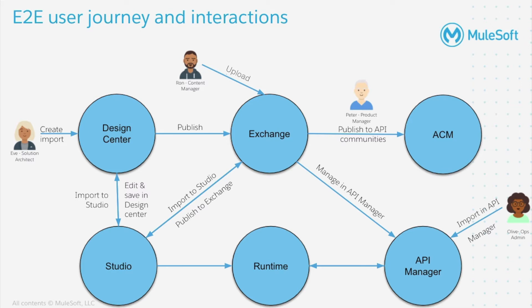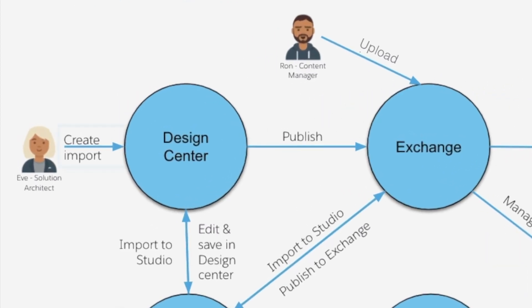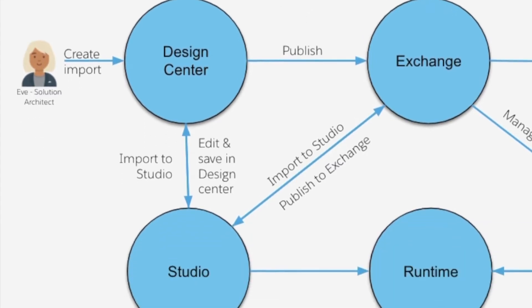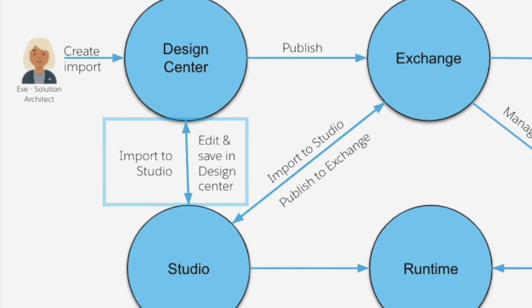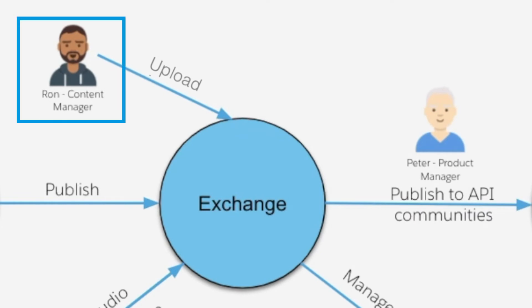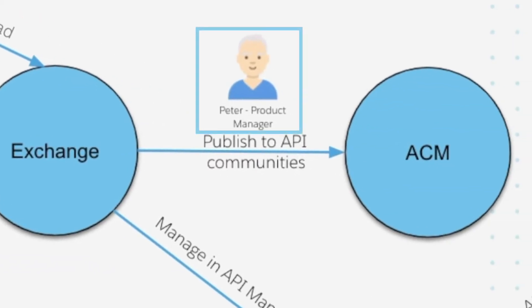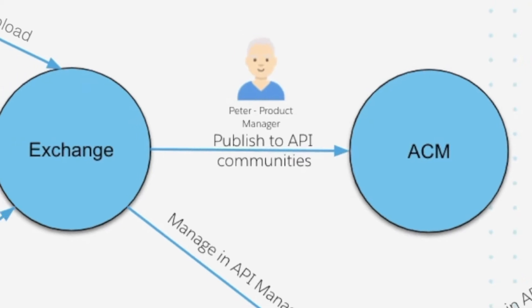As part of Phase 1, already released and generally available, Eve the solution architect can create API specifications using OAS 3 specification language in API Designer. The rich tool support available for building RAML specifications is now also available in OAS 3. Alternatively, if she has an OAS 3 spec, she can simply import it in API Designer and edit it with ease. Ron the content creator can upload already available OAS 3 specs in Exchange directly. Peter the product manager does not have to convert existing OAS 3 specs into RAML before publishing to API developer community portals built using Exchange or Anypoint Community Manager.